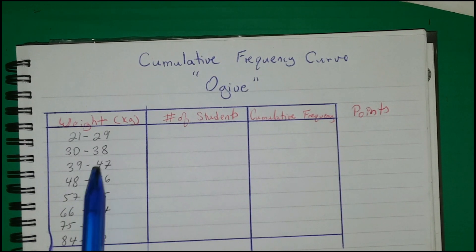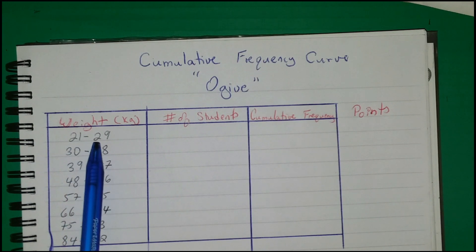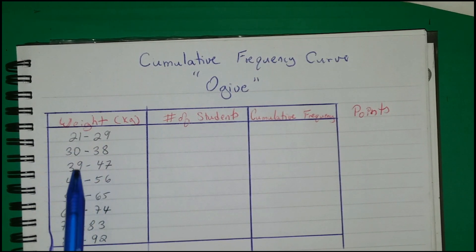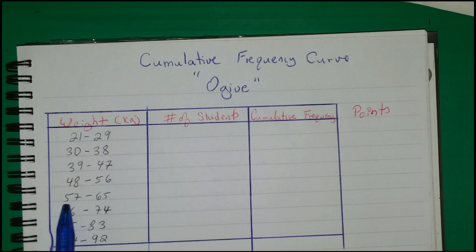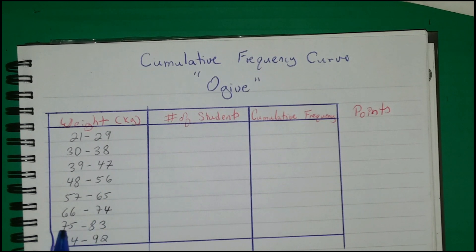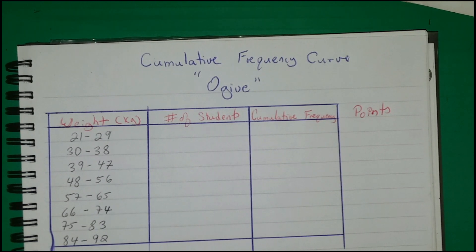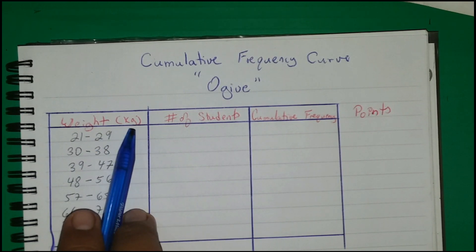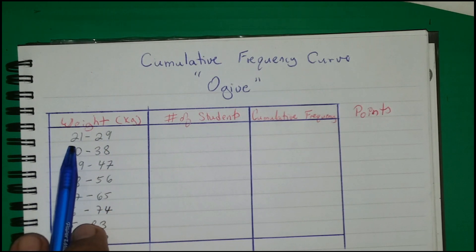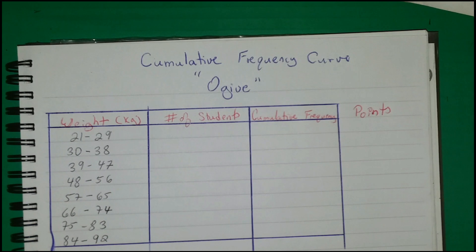The table shows weights in ranges: 21 to 29, 30 to 38, 39 to 47, 48 to 56, 57 to 65, 66 to 74, 74 to 83, and 84 to 92. This is from a simple survey.